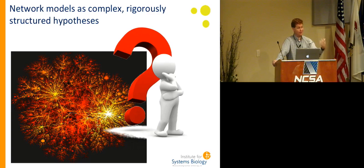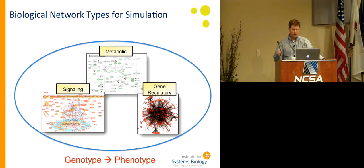So they are falsifiable, generally not in whole but in parts, and so this drives an iterative process of experimentation and model building. There are of course many different types of models one could think about at the cellular network level — signaling, metabolic, gene regulatory. I'm only going to talk about two of them today: metabolic and gene regulatory.